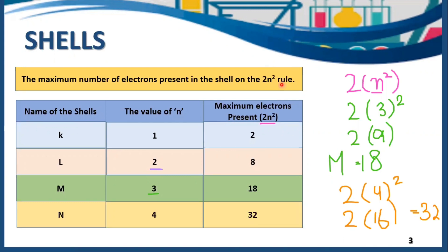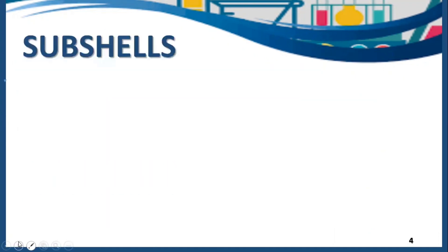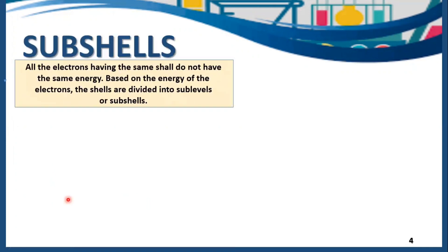In this way, with the help of the 2n² formula, we can find out the maximum number of electrons that we can put in K, L, M and N shells. Then come subshells. All the electrons having the same shell do not have the same energy. Based on the energy of the electrons, shells are divided into sub-levels or subshells, which means subshells are derived from shells.